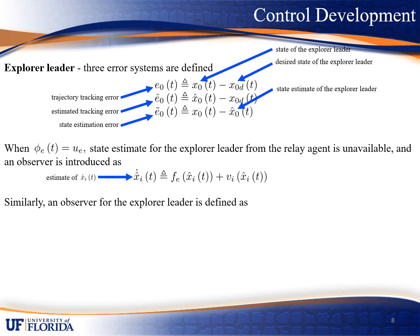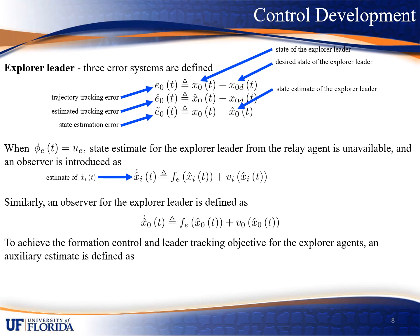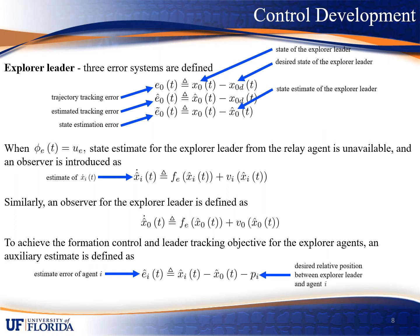To compensate for the leader tracking and formation control objective, we have to define this auxiliary estimate E_I hat to approximate the error of agent I. The variable D_I denotes the desired relative position between the explorer leader and agent I. Note that agent I will know this P_I in the unknown environment, and this variable will be used in the subsequent auxiliary controller design.